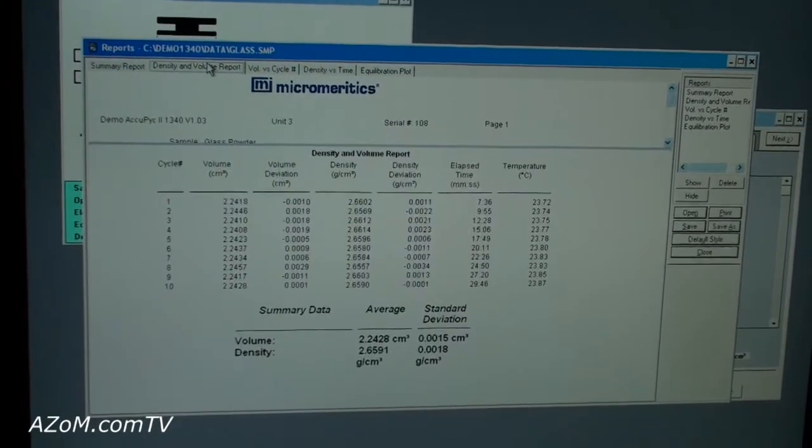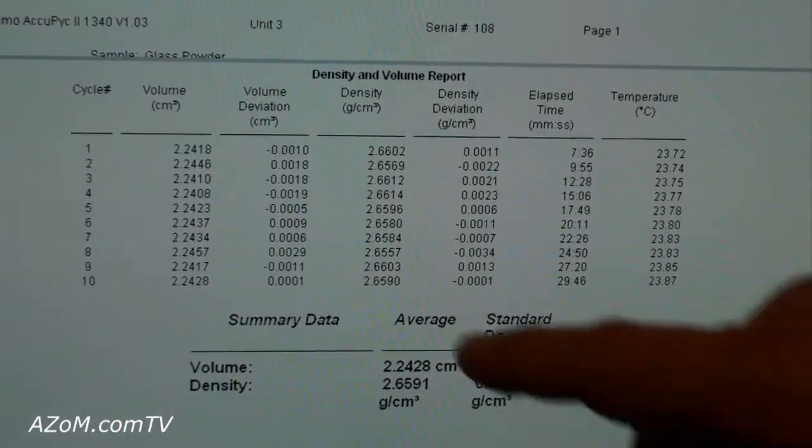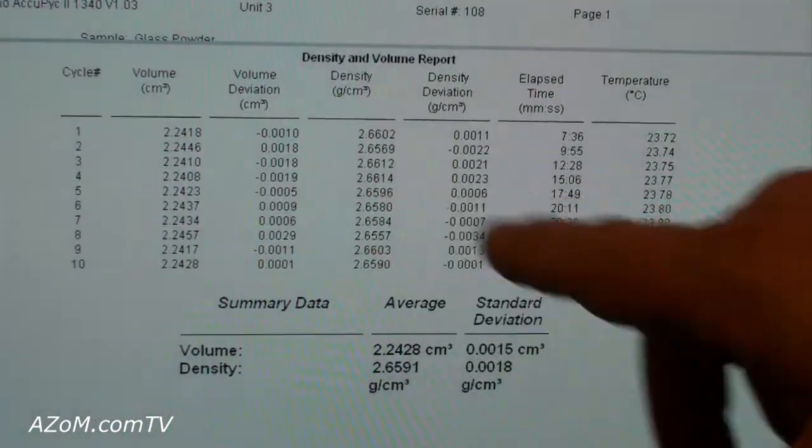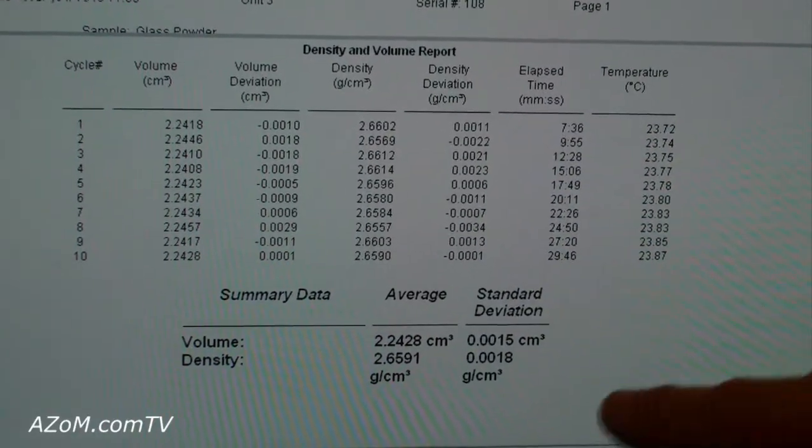If we looked at the number of tests in this case, there were 10 replicates done, where we looked at the volume and density and deviations for each of those tests, the elapsed time and the temperature. And again at the bottom, we are seeing the average volume and average density for those 10 replicate tests.